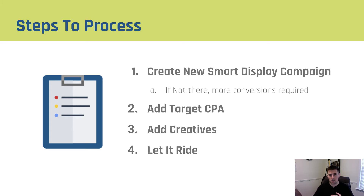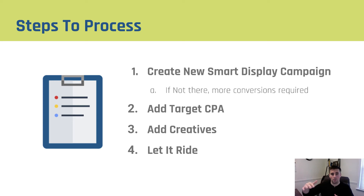Secondly you're gonna add your target CPA — so you're gonna tell Google you want leads at two, three, five, fifteen dollars, whatever yours is. Plug that in and it will know it needs to optimize to that point. Then you're gonna add creatives and then you're just gonna let it ride.